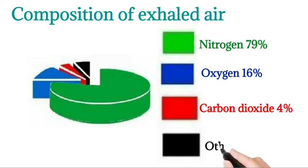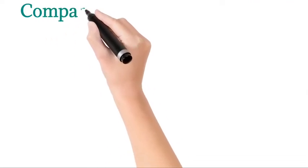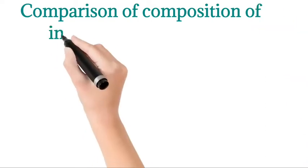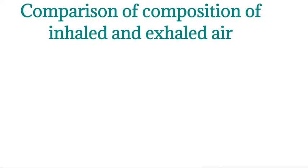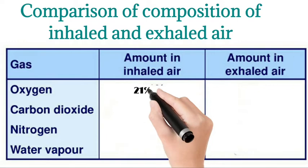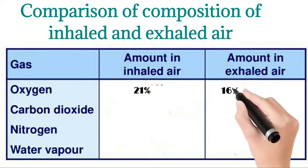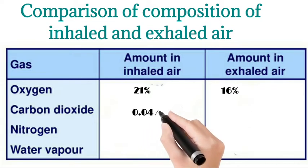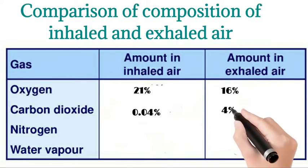The black color represents others such as water vapor and dust particles. Next we move on to the comparison of inhaled and exhaled air — let's draw a table. Oxygen gas is 21 percentage in inhaled air and 16 percentage in exhaled air. Carbon dioxide is 0.04 percentage in inhaled air and 4 percentage in exhaled air.